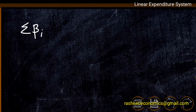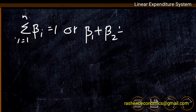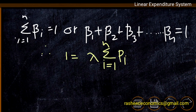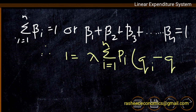That is, beta_1 + beta_2 + beta_3 + ... + beta_n = 1. This shows that the entire change in income is fully consumed — the total income of the consumer is fully spent on different groups of commodities. Therefore we can rewrite the previous equation as: 1 = lambda * sigma of pi*(qi - qi_dash), where i = 1 to n.